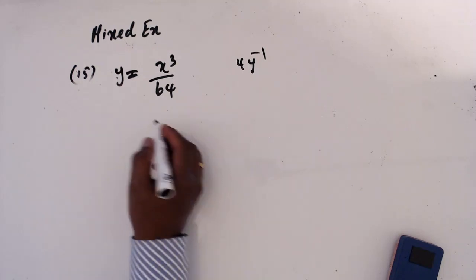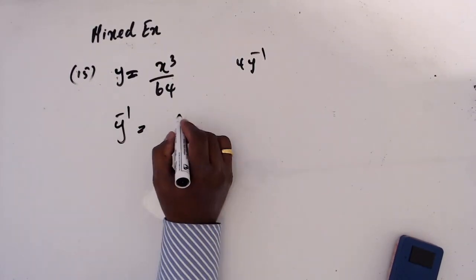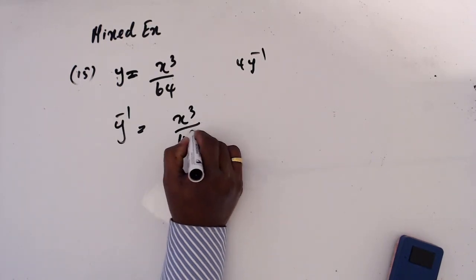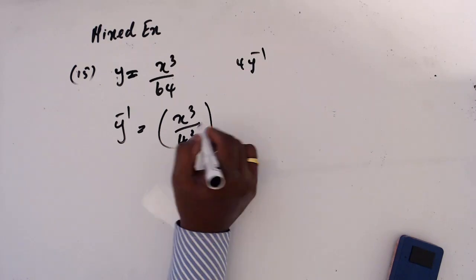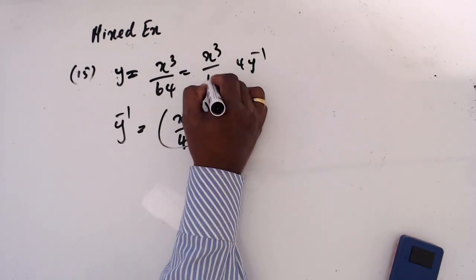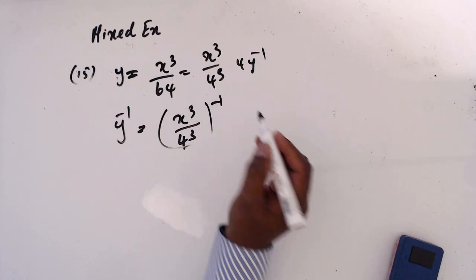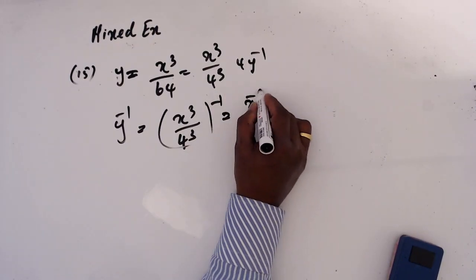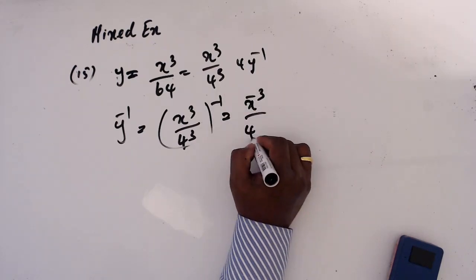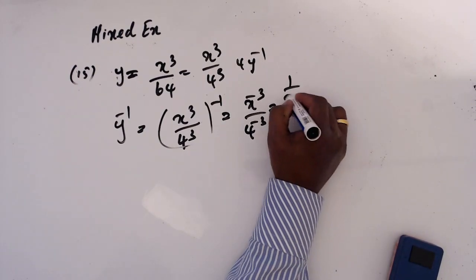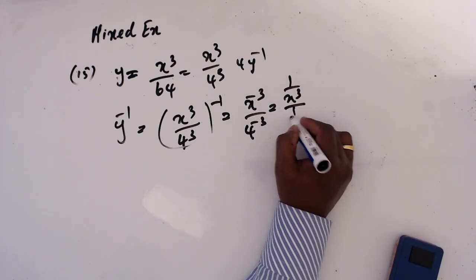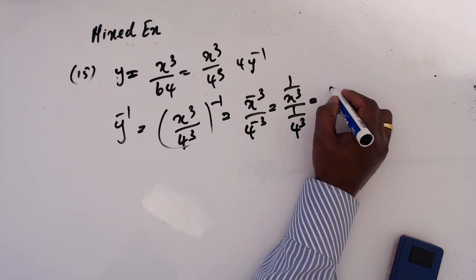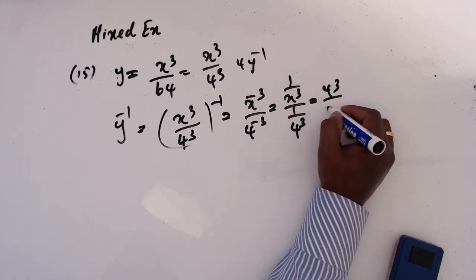This is also a possible approach: write y = (x/4)³, so y = x³/4³. Then y^(-1) = (4/x)³ = 4³/x³. Multiplying by 4: 4y^(-1) = 4 times 64/x³ = 256/x³.